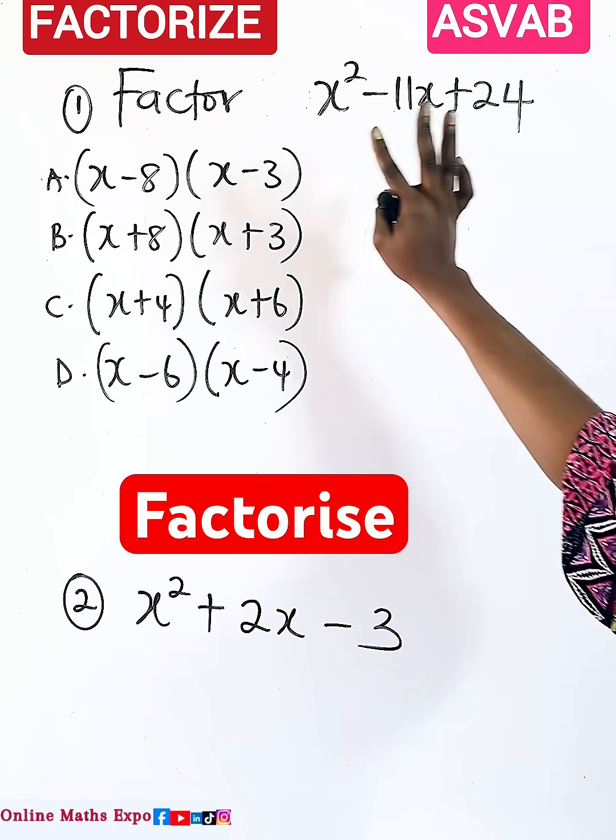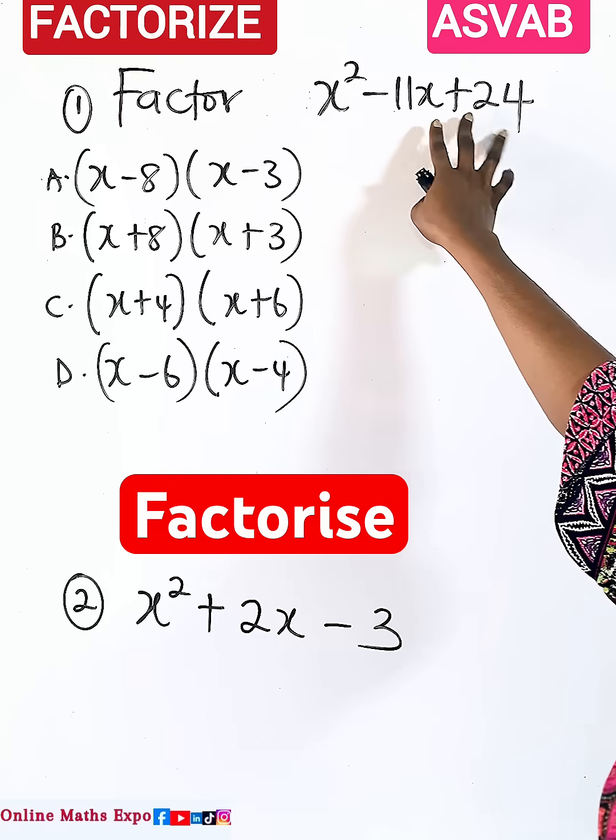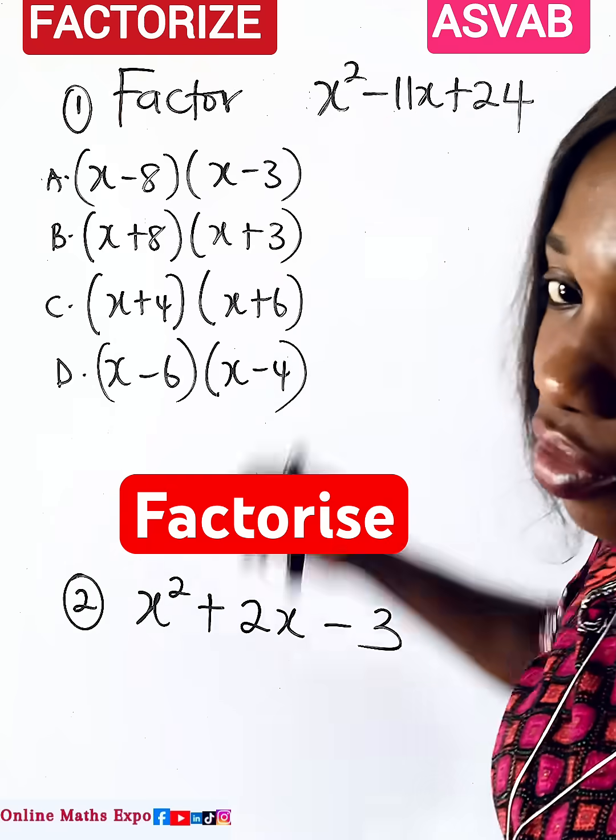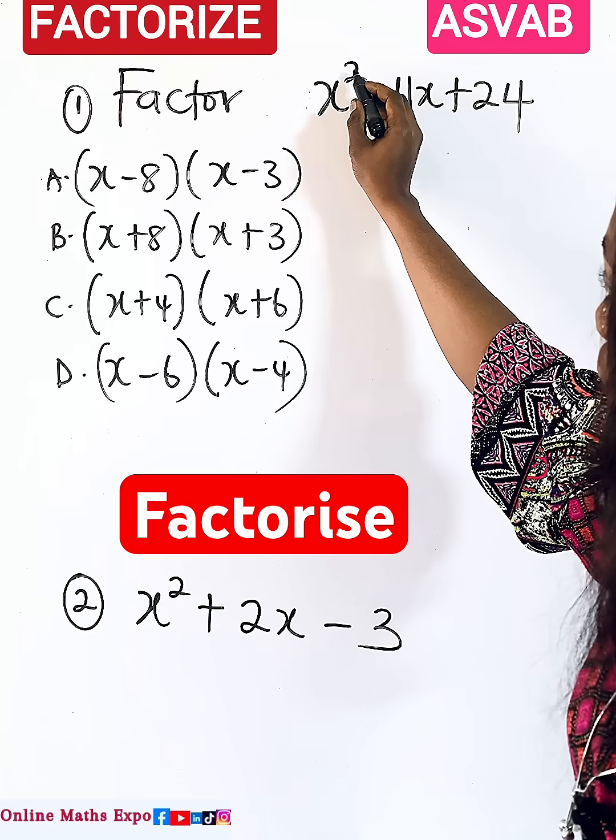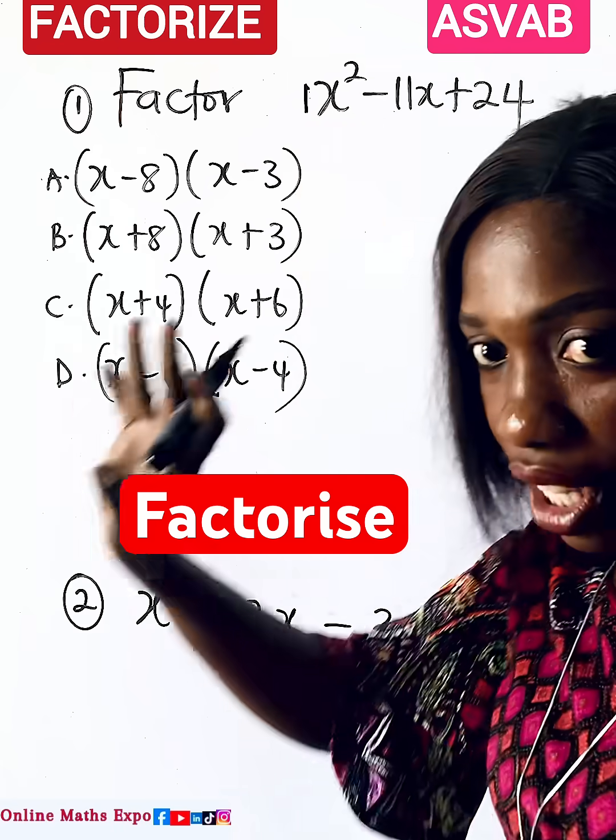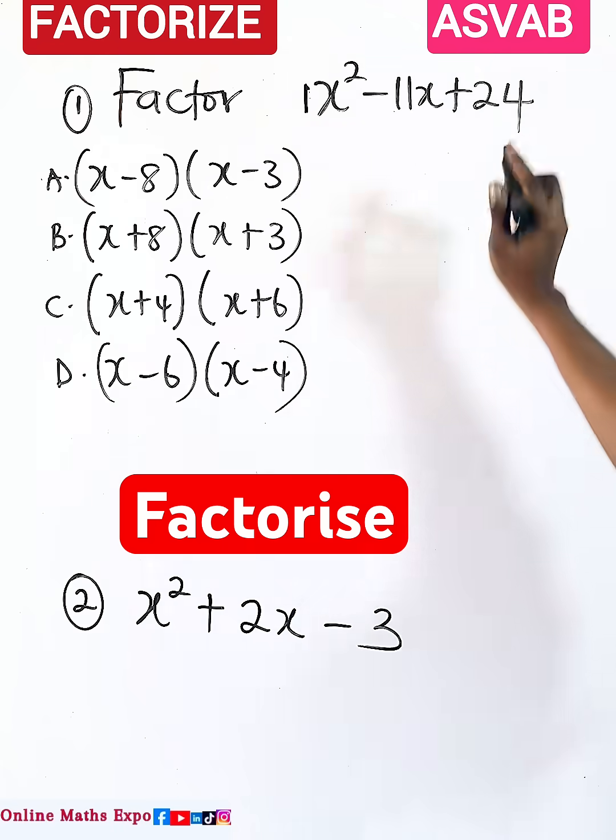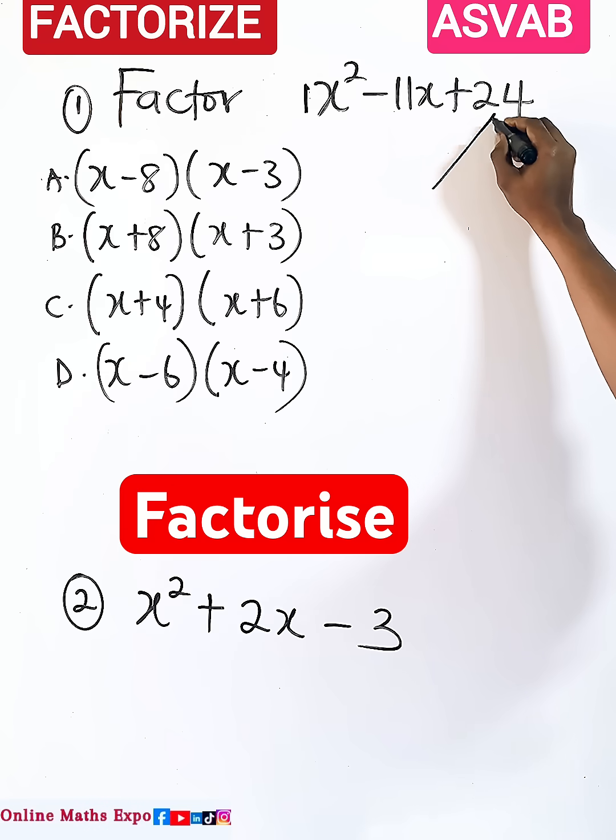We are asked to factor this. Now for you to do this, this is your quadratic expression because you see the highest power of x is two. So what you will look out for is you see the coefficient of this value here is one, you don't have a problem.